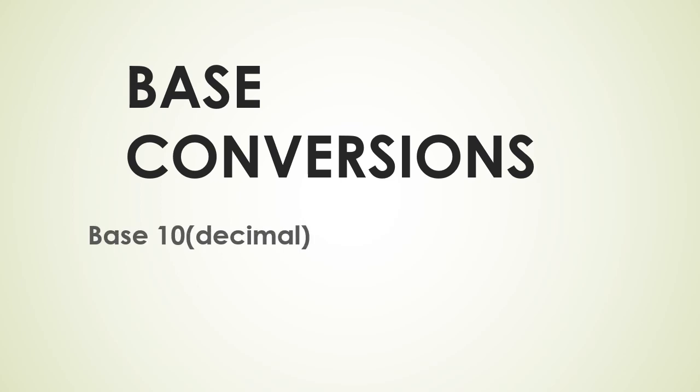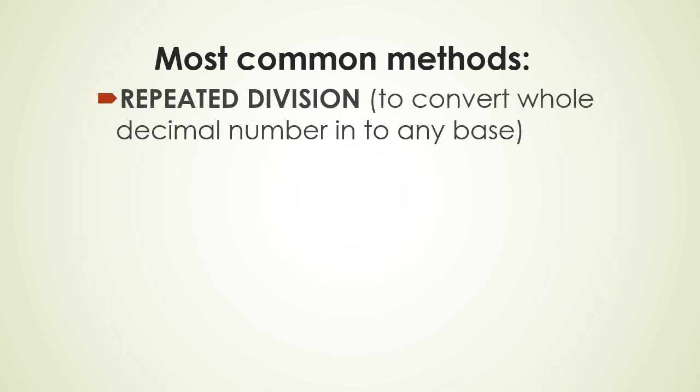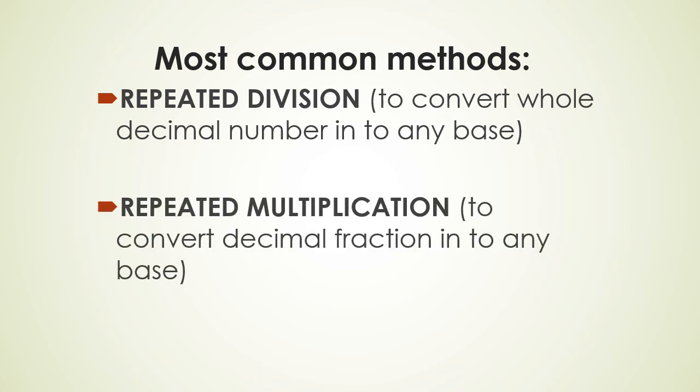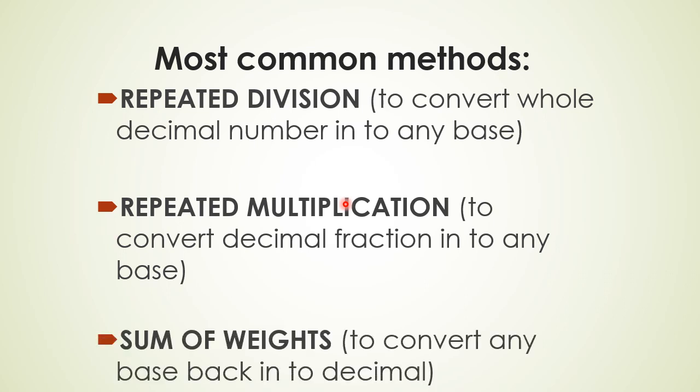The most common methods to convert any decimal number to any other base or to convert any other base back to decimal are three methods. Repeated division: if I want to convert a whole decimal number without any point, I can use the method repeated division. Second, repeated multiplication: it is used to convert any decimal fraction into any base. Last, if I want to convert any other base 3, 5, 7, or 9 into decimal, I use the method sum of weights, a very important method.